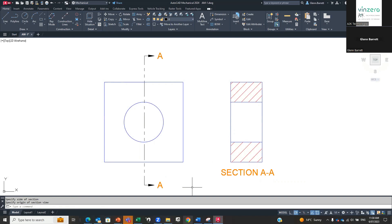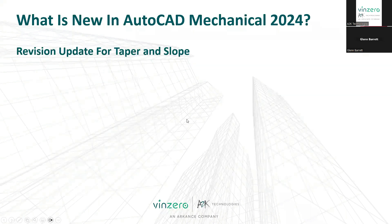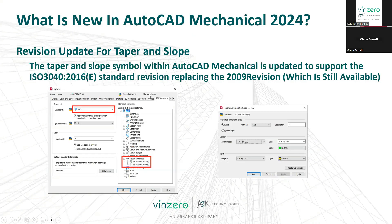Another thing they've done in mechanical is a revision update to the taper and slope. So if you're doing shafts and things like that, they've actually updated all of this. Under the ISO standard, they've gone to ISO 3040. They've now come up to the 2016 version, whereas they used to have the 2009. So they are looking at standards and keeping them up to date.